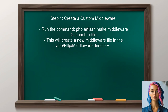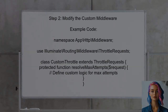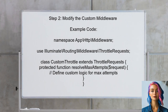To override the default throttle setting for specific routes, you need to define a custom middleware. This middleware will allow you to specify different throttle limits for different routes. Open the newly created middleware file and modify it to accept custom throttle limits. You can extend the existing throttle middleware functionality.